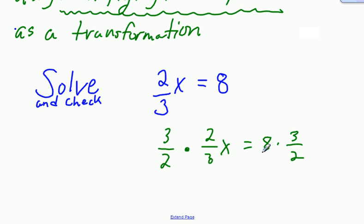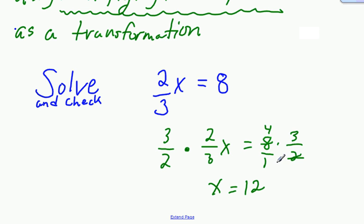We can throw 8 over 1 if we want to and cancel — that makes a 4. So that makes x equals 12 on this one. What I did was cancel the common factor of 2 in the 8 and the 2, leaving 1 behind, so it's 12 over 1.